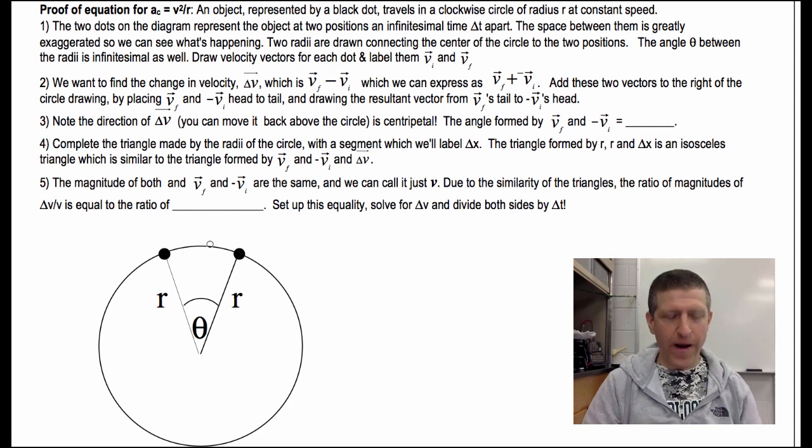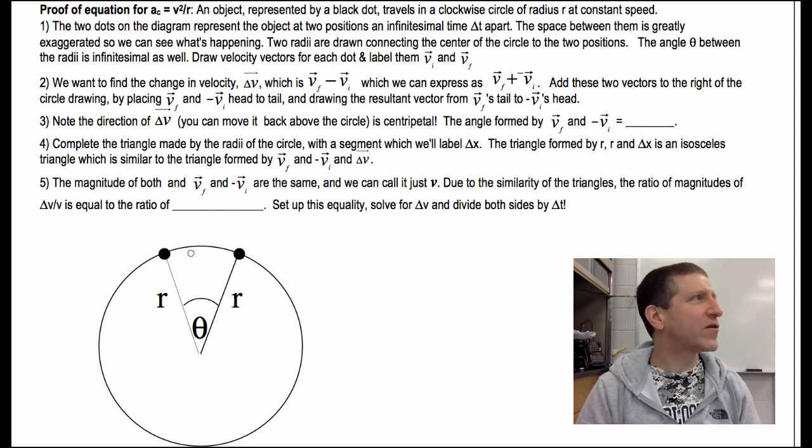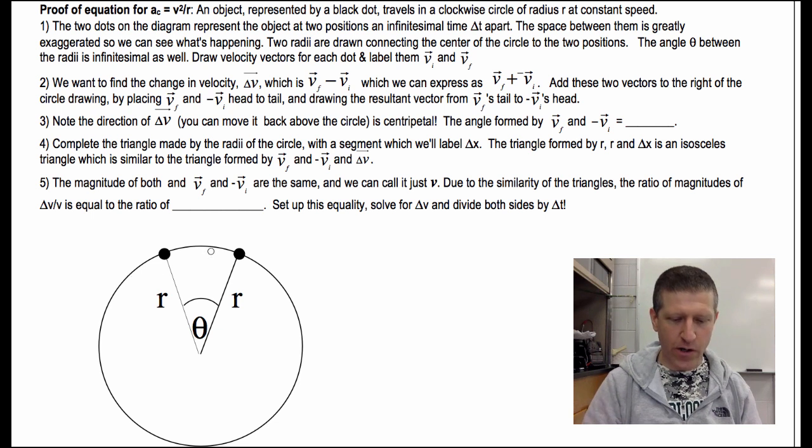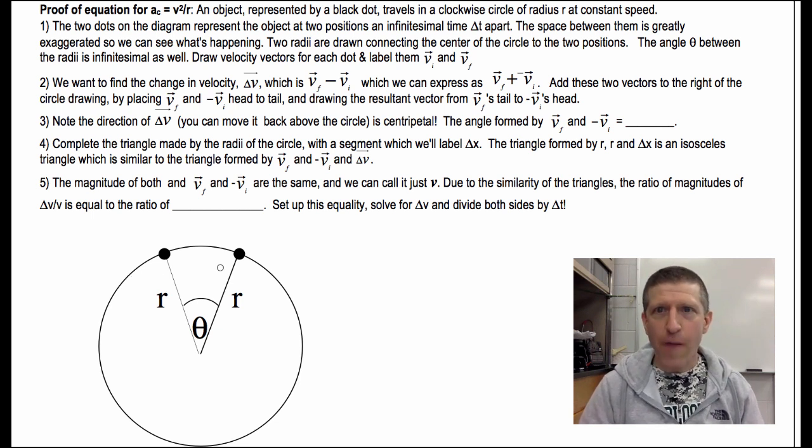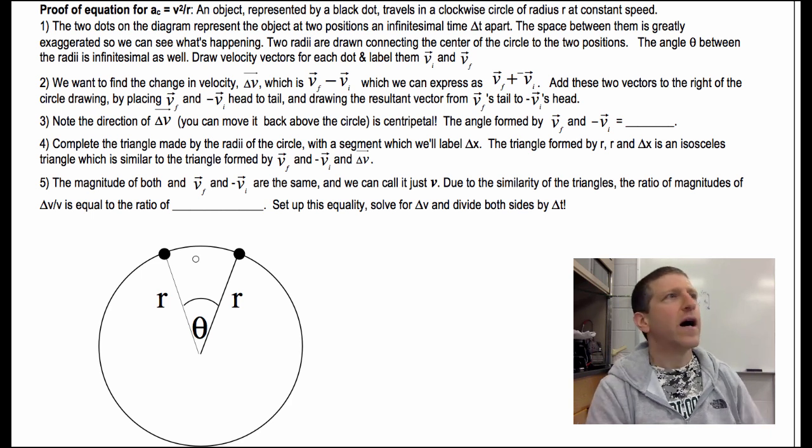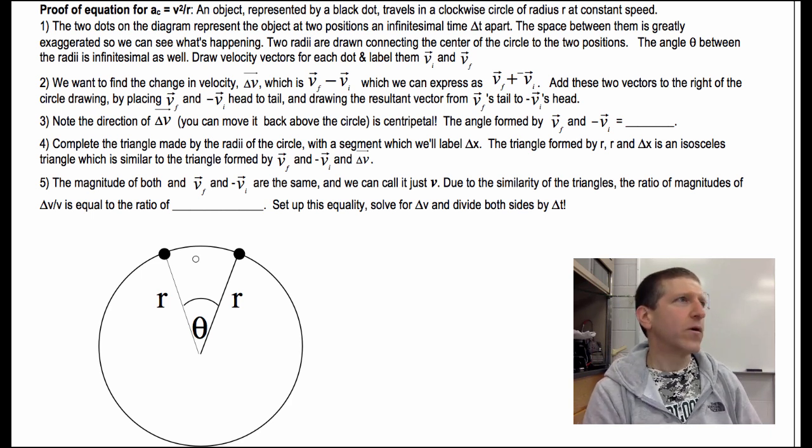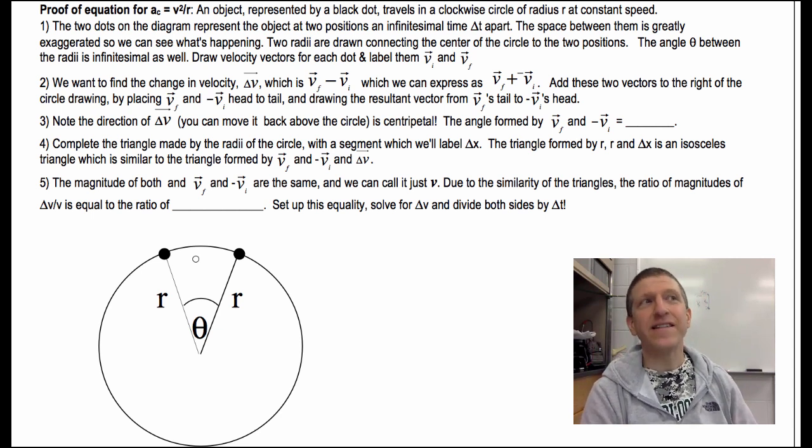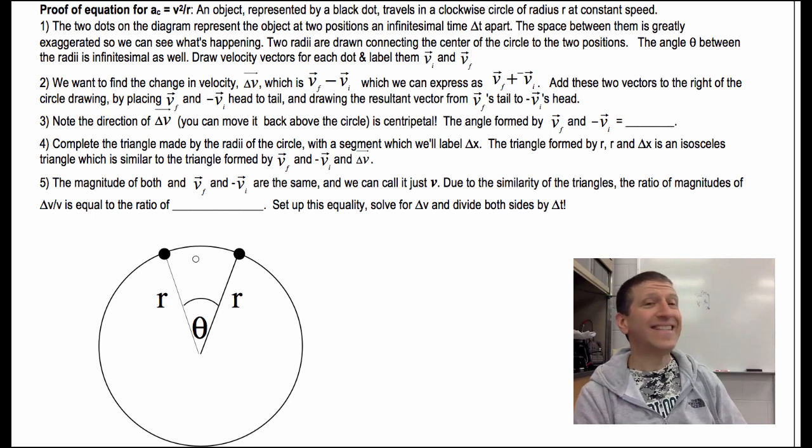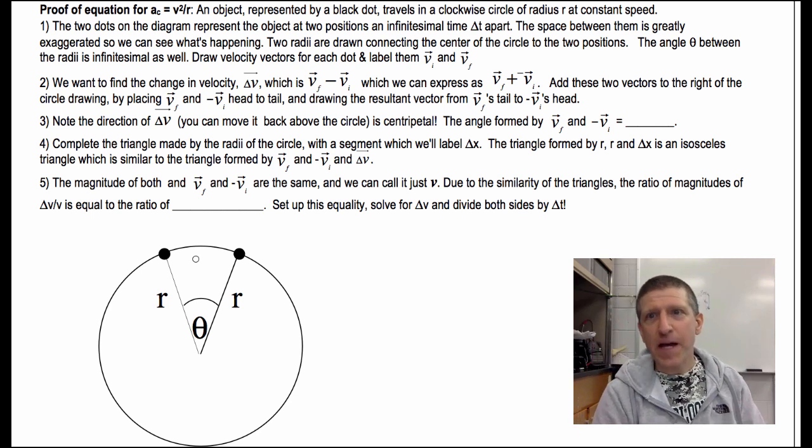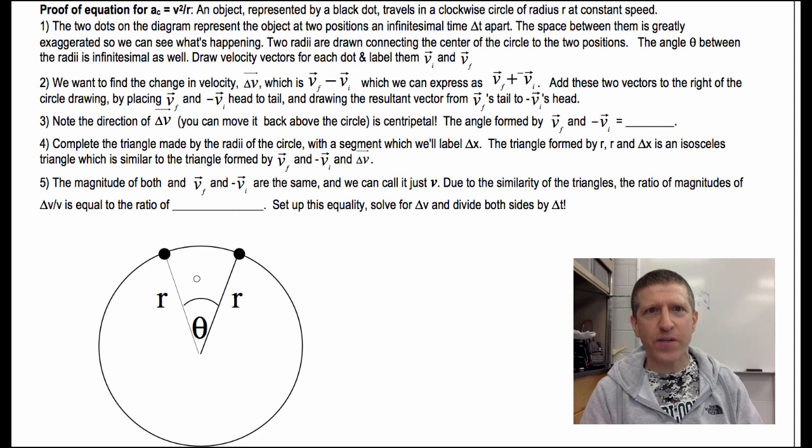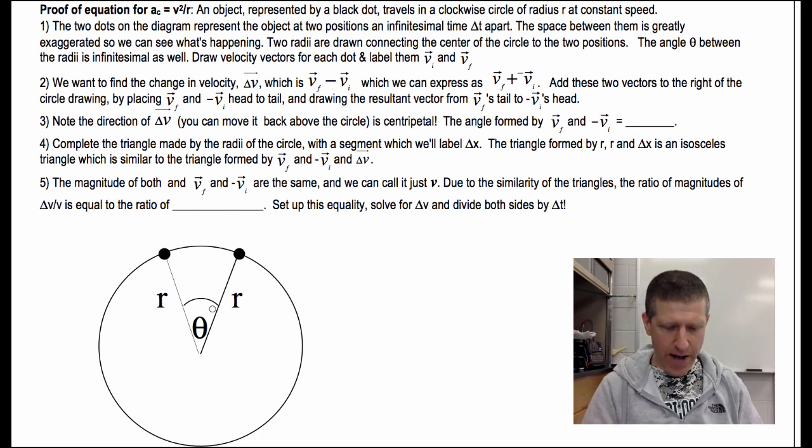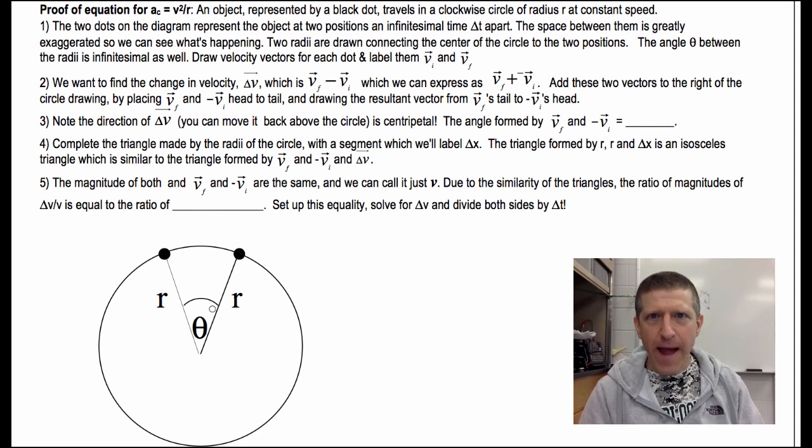But in order to, if I drew them infinitesimally apart, we couldn't see that there are two dots. So I'm actually, I exaggerated the distance apart there. So, they're only a time delta T, which is infinitesimal apart. Now, of course, in calculus, what could we call that instead of delta T? DT. That is an infinitesimal. Delta T is DT. The space between them is greatly exaggerated so that we can see what's happening. And I've got these two radii drawn right there. And the angle theta is also infinitesimal.